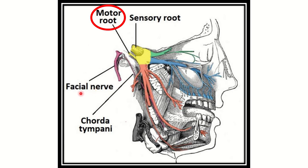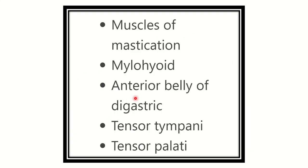Here we can see another nerve — the facial nerve. The muscles supplied by the trigeminal nerve, cranial nerve 5, are the muscles of mastication. These are four muscles: masseter, temporalis, medial pterygoid, and lateral pterygoid.